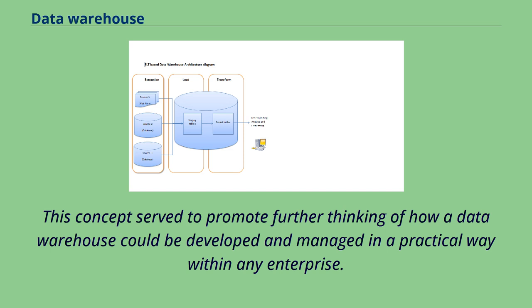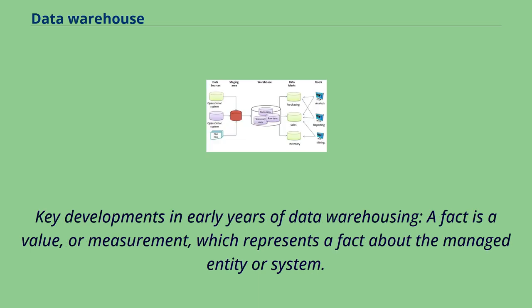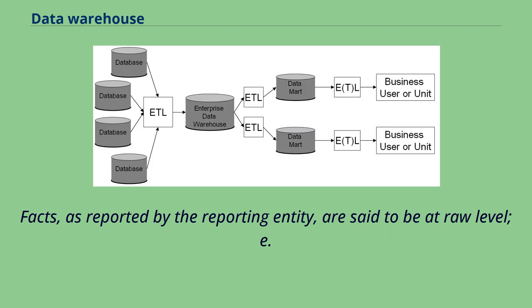Key developments in early years of data warehousing: a fact is a value or measurement which represents a fact about the managed entity or system. Facts as reported by the reporting entity are said to be at raw level.